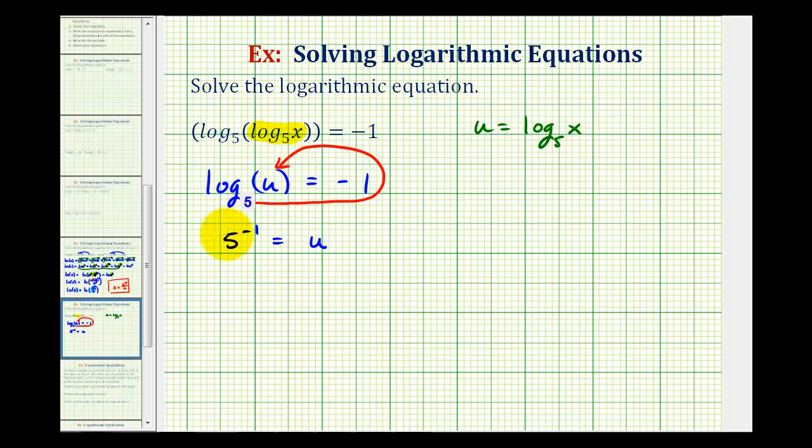Well, five to the negative one, we could put this over one, move this down to the denominator, which would change the sign of the exponent. So this is equal to one-fifth. So one-fifth equals u.